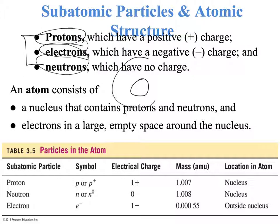Outside the nucleus, we have the electrons. Protons have a positive charge. Electrons have a negative charge. Neutrons have no charge.